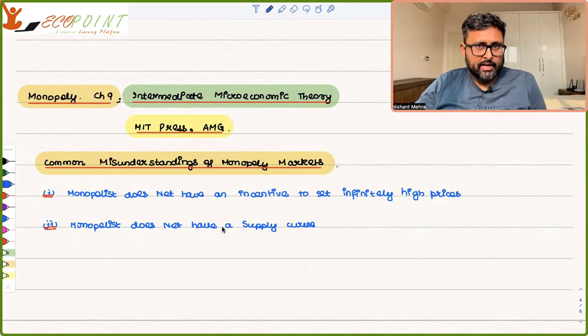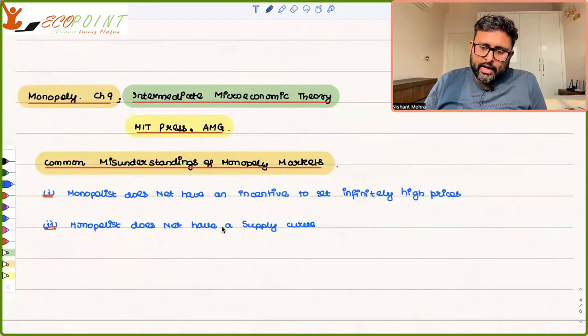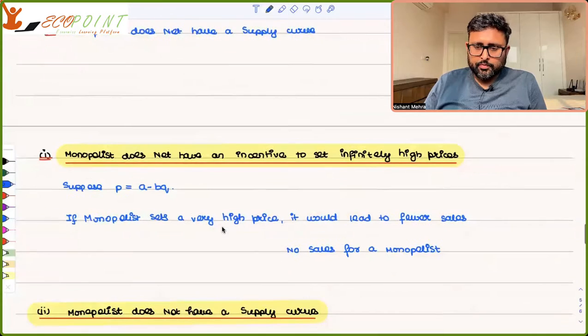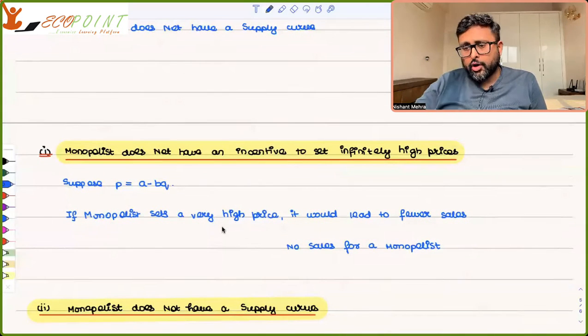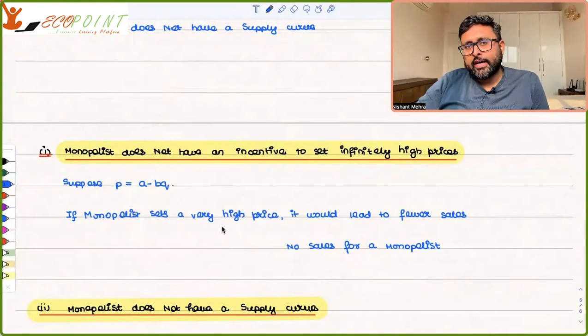And monopolist also has a supply curve as the perfectly competitive market. No, he doesn't have a supply curve. So we'll look at it by exactly why we're saying so. See, one thing is that monopolist doesn't have an incentive to set infinitely high prices.